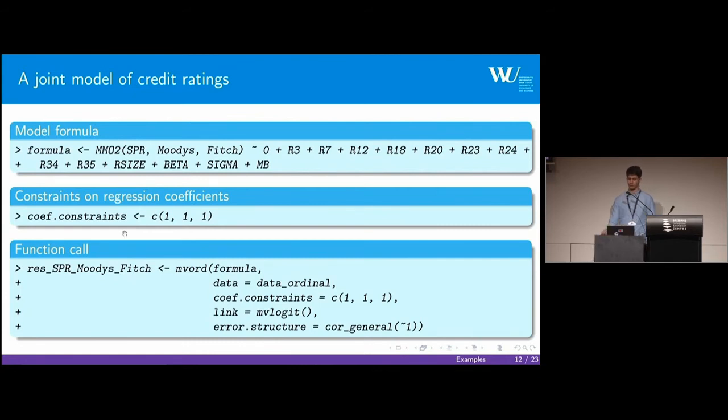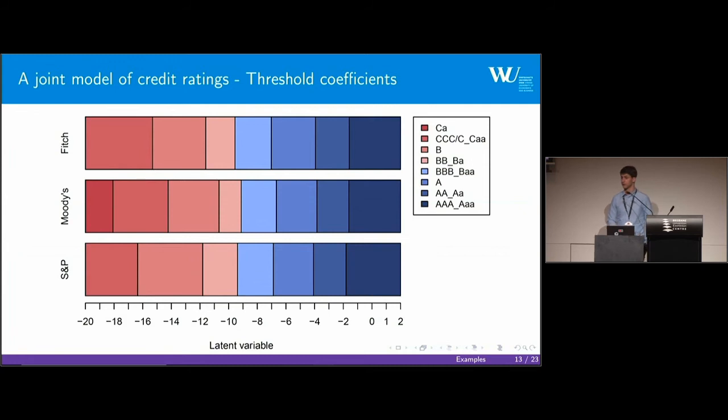Another model: a joint model of credit ratings. Here we added in addition to Standard & Poor's and Fitch, Moody's ratings as well. On the right-hand side of the formula everything stays the same. Now we want to set the regression coefficients to be equal. This is just performed with a vector of ones. Then we fit the model and can have a look at the threshold coefficients. We see that Moody's seems to be a little bit more conservative in the speculative grade area, while for the investment grade areas they are quite similar, the thresholds. And Fitch seems to be a little bit more optimistic around the investment grade, speculative grade boundary.